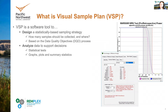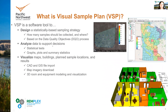The next phase is analyzing data to support decisions. Once results are available, you perform statistical tests, look at graphs, plots, and summary statistics. VSP also visualizes maps, buildings, plans, sample locations, and results. A number of different file formats can be imported, as well as downloading map imagery in the background. There are tools and visualization options for looking at 3D rooms, buildings with multiple floors, as well as equipment and furniture. All of these together make VSP a much more powerful tool for coming up with a sample size, communicating about a sampling plan and results, and visualizing this information in conjunction with the sampling.